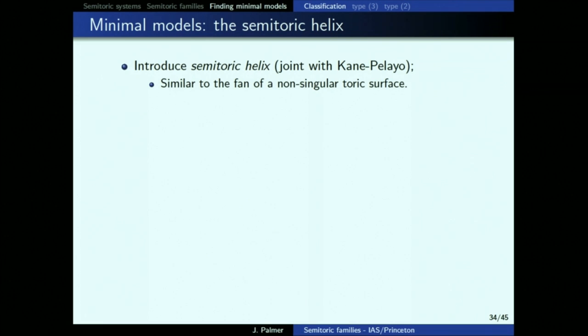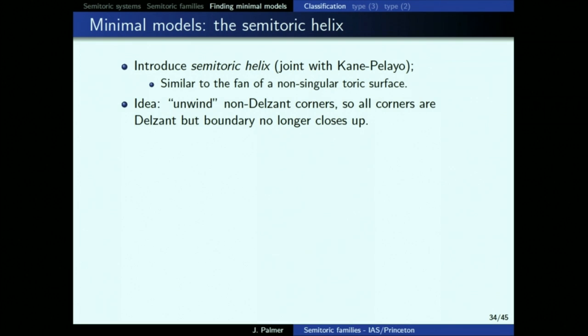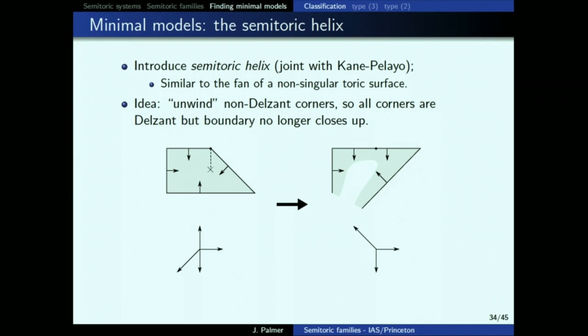Instead of following the boundary of a polygon and getting back where you started, you follow a boundary that doesn't close, and you can keep going — which is why we call it a helix. You actually get an infinite sequence of integer vectors. And the idea is that by transitioning between these vectors using matrices in SL_2(Z), you can classify them. You need a universal cover of SL_2(Z), so some algebraic machinery is involved.